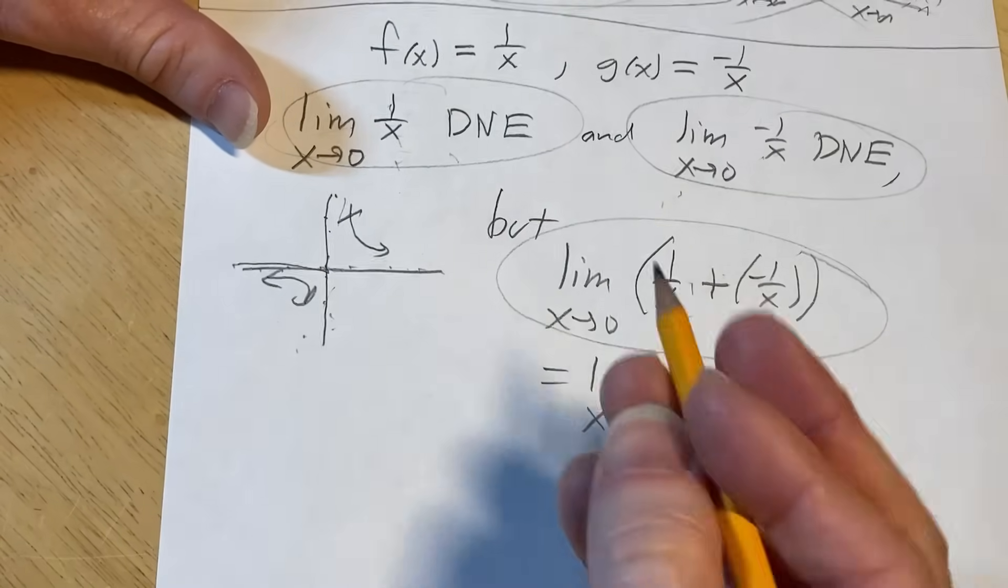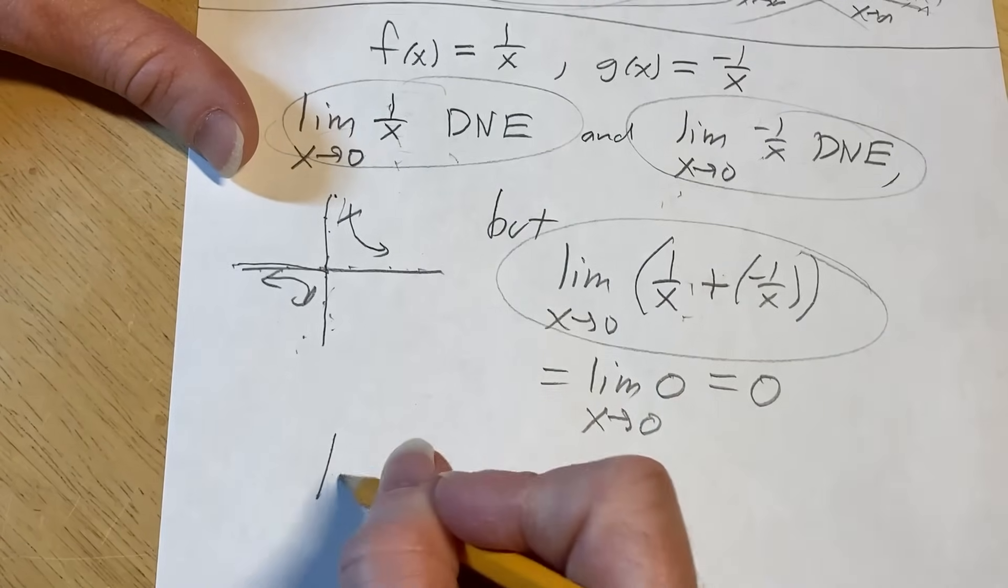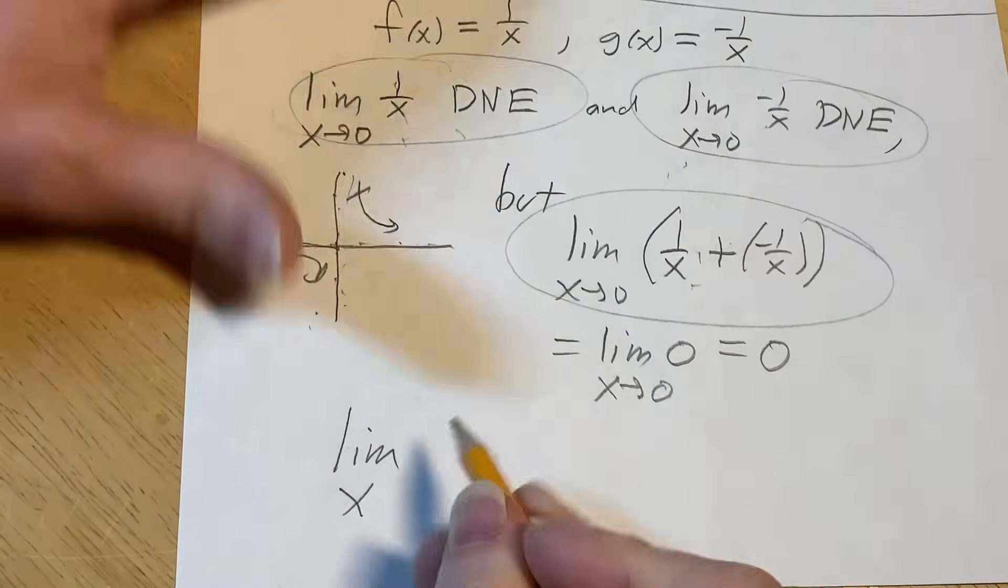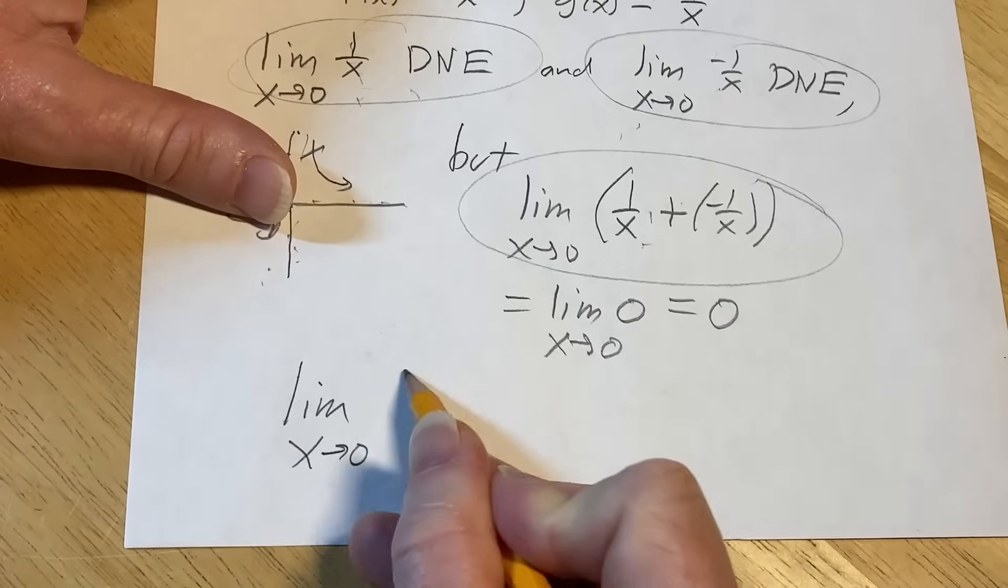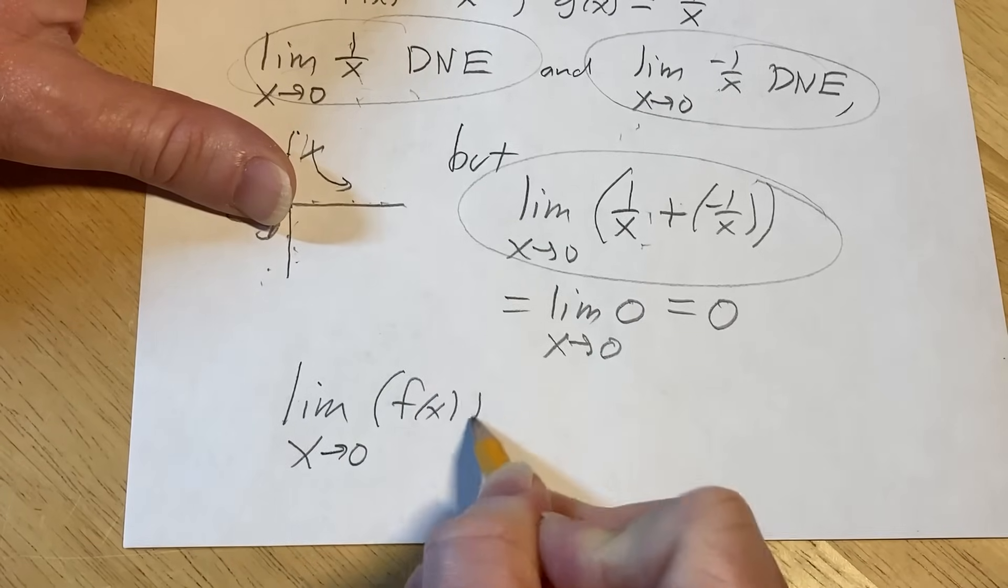When you're doing a proof and you're trying to prove that, I'm trying to show that this exists.